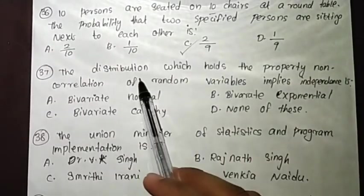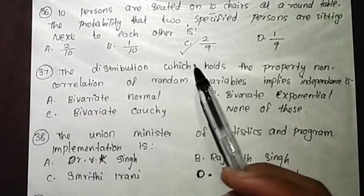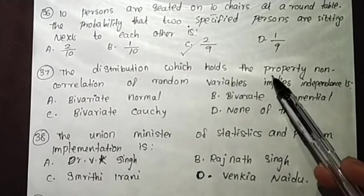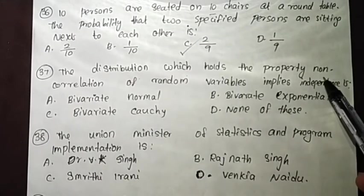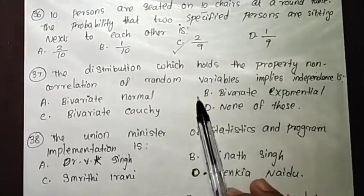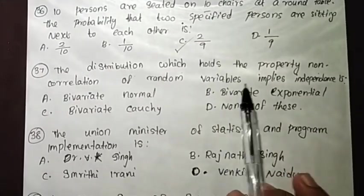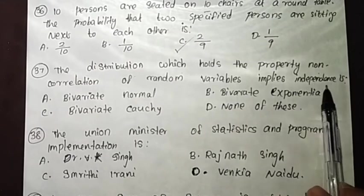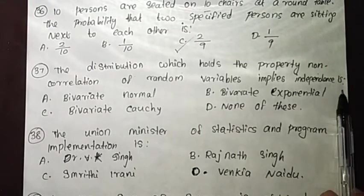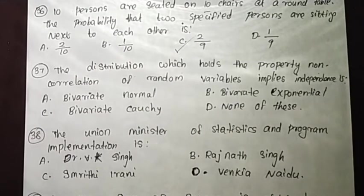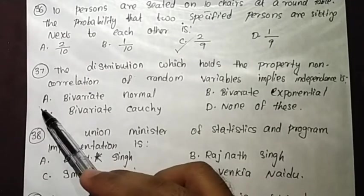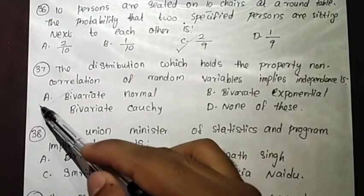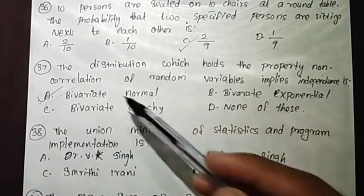The distribution which holds the property that non-correlation of random variables implies independence is the bivariate normal distribution. That is the answer.